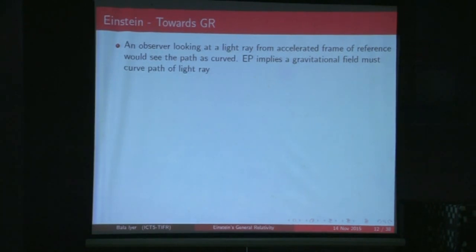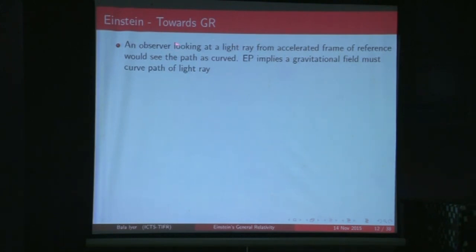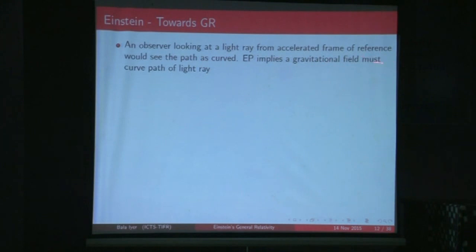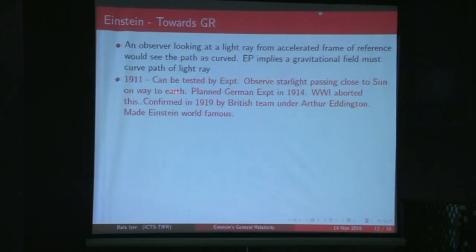Once Einstein understood this, he began his famous thought experiments to go from accelerated frames to what should happen in a general gravitational field. He asked: what happens to a light ray if you look at it from an accelerated frame of reference? Light propagating in a straight line in an inertial frame will follow a curved path in an accelerated frame. According to Einstein, the accelerated frame is equivalent to a gravitational field, so he concluded that in a gravitational field, the path of a light ray must be bent or curved.